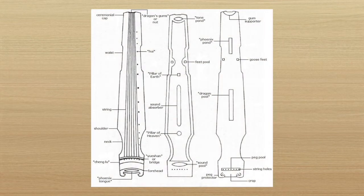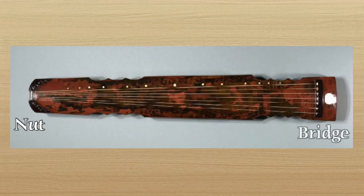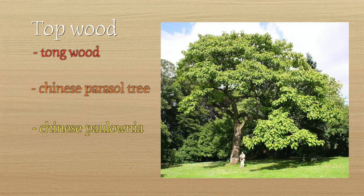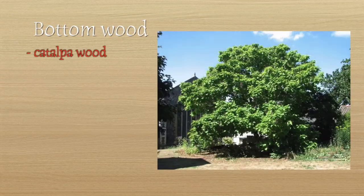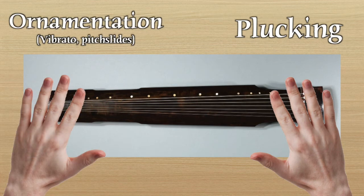In terms of construction, the guqin and many other types of ziver consist of a sound chamber formed by two long planks of wood glued together, which have sound holes in the bottom, and they're supported by feet so that it can be played on a surface without blocking the sound holes. The strings are stretched over the body from a nut at one end to a bridge at the other end — it's basically like having just the neck of a guitar be the entire instrument. The materials used tend to be very important and traditional; for example, the top wood usually must be made of tong wood, Chinese parasol tree or Chinese paulownia, and the bottom is usually made of catalpa wood or camphor wood. Zivers are played traditionally by plucking the strings with the right hand and adding ornamentation such as vibrato and pitch slides with the left.